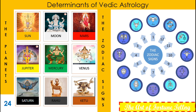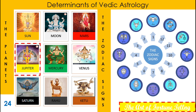Then is the planet Mars. It is the commander in the hierarchy of planets, known for its anger and aggression. Then is Jupiter — Brihaspati, Gurudev. This planet is known to be the teacher of all gods.